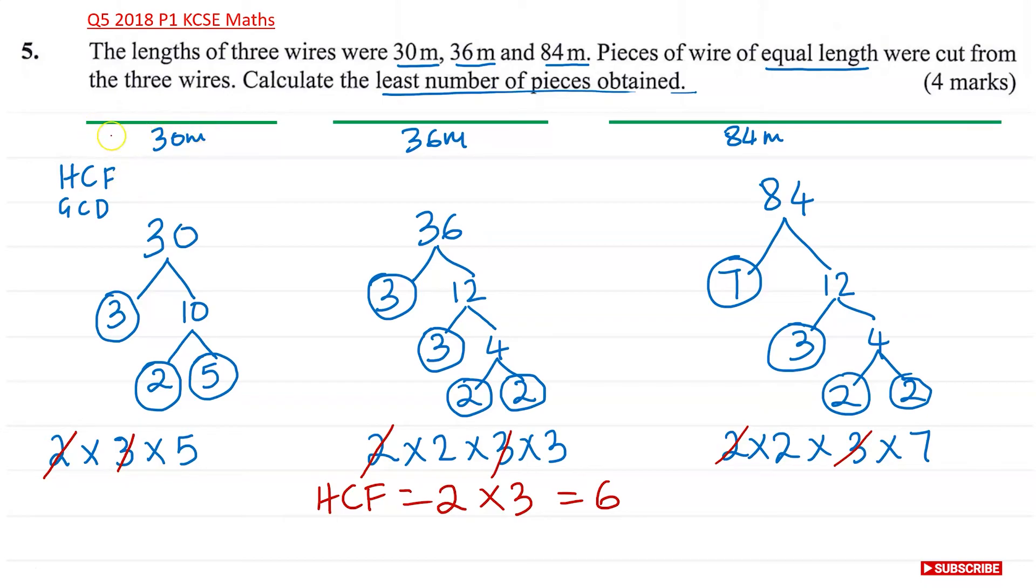Now that means we need to cut this wire into pieces of 6 meters. So how many pieces can we get from this wire? 30 divided by 6 is 5, so we're going to have 5 pieces. From this wire, 36 divided by 6, we're going to have 6 pieces of wires. And over here, 84 divided by 6, this will give you 14 pieces of wires. So in total, your answer is 14 plus 6, which is 20, plus 5 is going to be 25 pieces of wires.